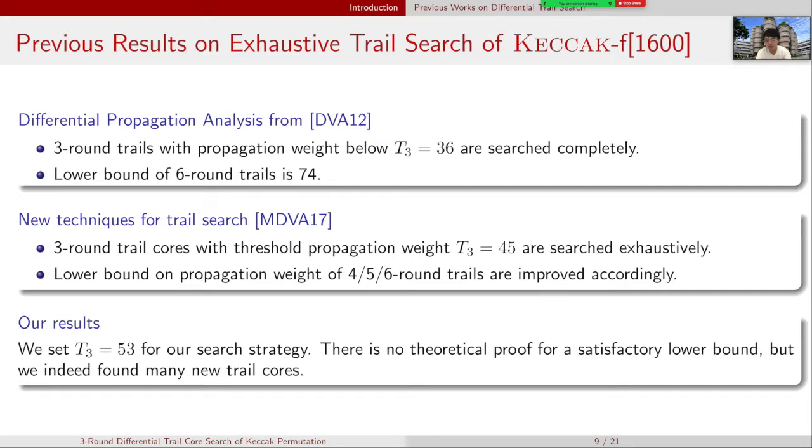As for the previous result on exhaustive trail search for Keccak, in the paper Differential Propagation Analysis from the Designers in 2012, they claimed that three-round trails with propagation weight below 36 are searched completely, and the lower bound of six-round trails is 74.